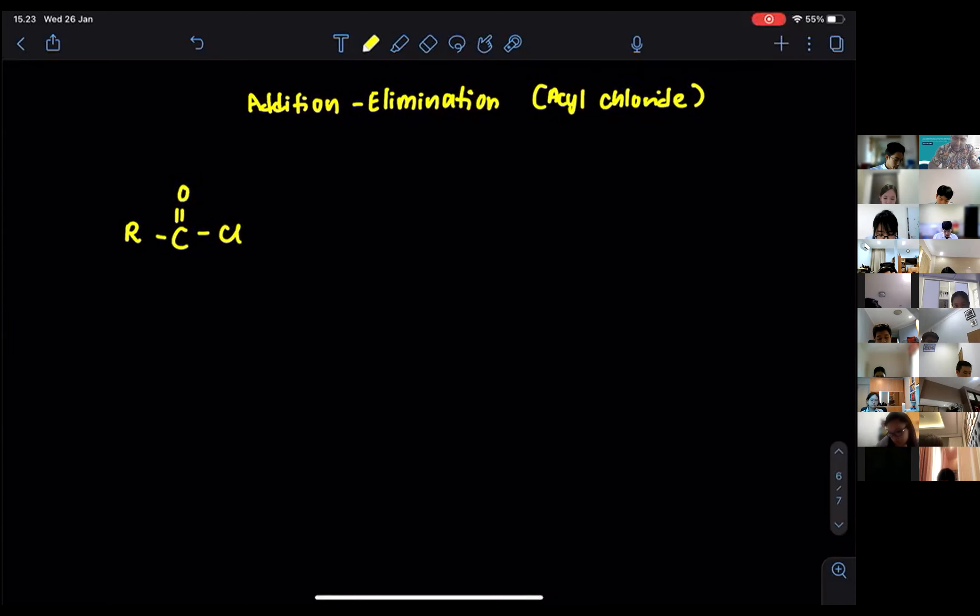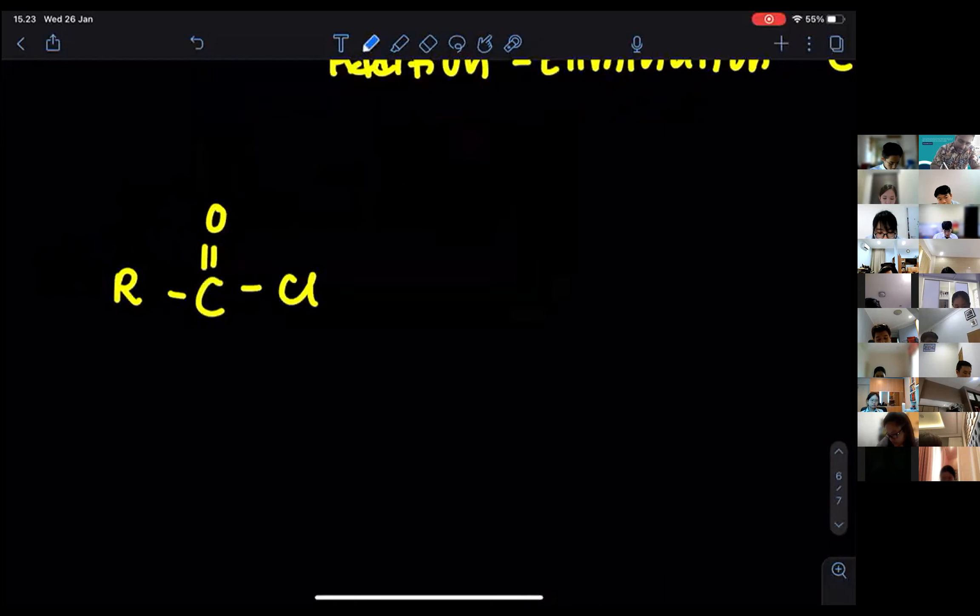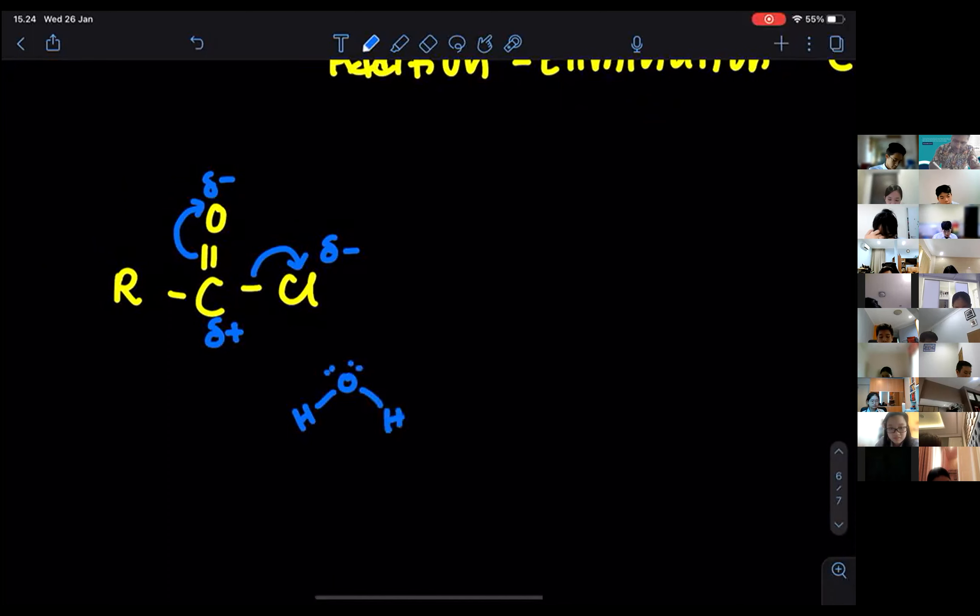Now first thing, look at what I'm doing first. So you see the first thing, the electron from here will go here, delta negative. Second, the electron from here to here, delta negative, that is going to make the carbon to become delta positive, and it will attract water or any nucleophile, in this case water, so they will attract water.